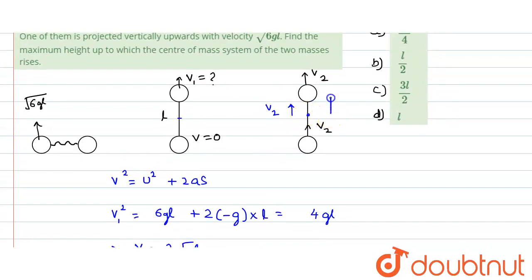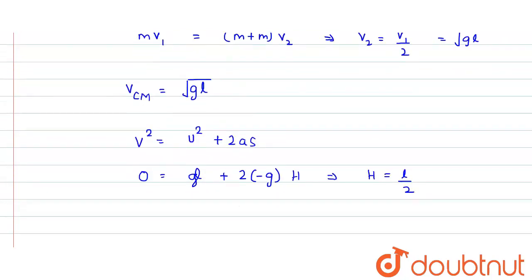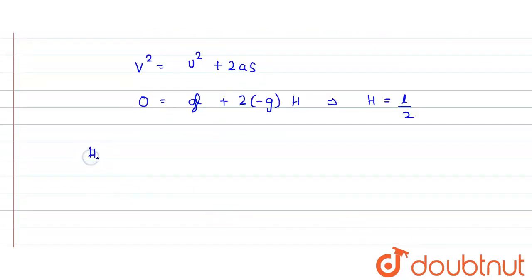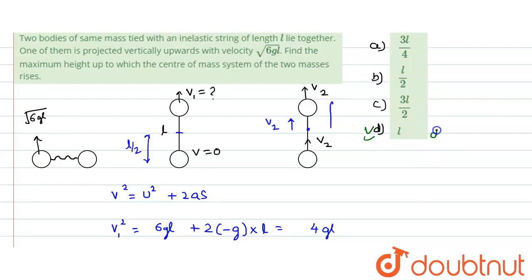So from this location the center of mass rises l/2. But initially, when the two blocks were lying together on the surface, the center of mass was already at a height of l/2 from the surface. Therefore the maximum height of the center of mass is h_max = l/2 + l/2 = l. The correct option is D.